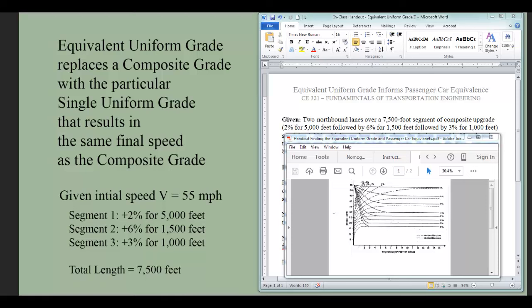An equivalent uniform grade replaces a composite grade with the particular singular uniform grade that results in the same final speed as the composite grade. In this example, we're given an initial speed of 55 miles an hour and a composite grade with three segments: Segment 1 +2% for 5,000 feet, Segment 2 +6% for 1,500 feet, and Segment 3 +3% for 1,000 feet, for an overall distance of 7,500 feet.